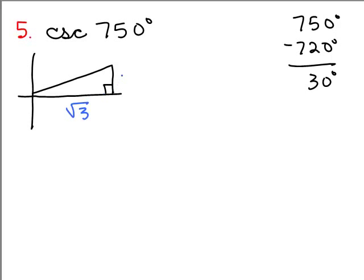Now, remember the cosecant is the reciprocal of the sine. So the sine is y over the hypotenuse, which would be 1 half, the reciprocal would be 2 over 1. So the answer to this one is 2 over 1, it's just the number 2.